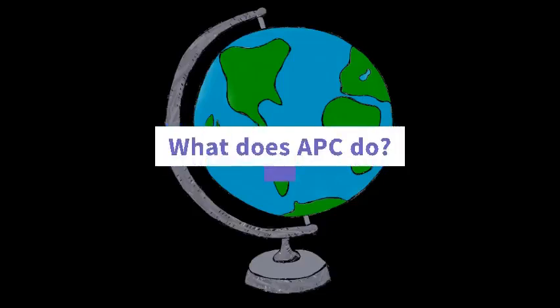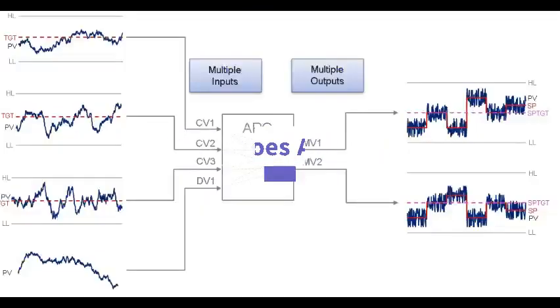So what does APC do? It controls multiple inputs using multiple outputs in a process so that you achieve process stability.